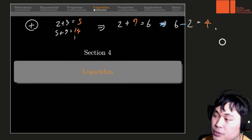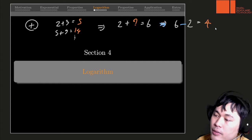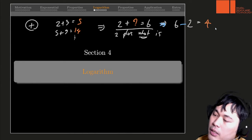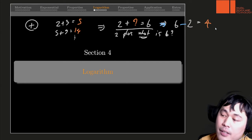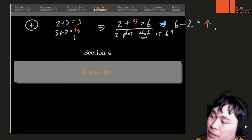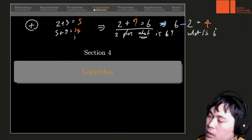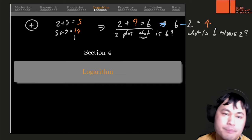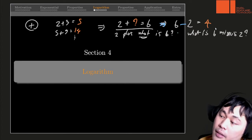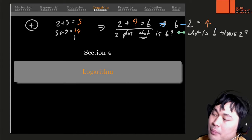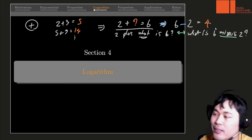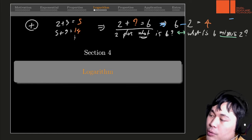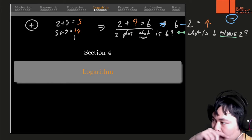The answer and the question mark here is number 4 because 2 plus 4 is 6, so 6 minus 2 is 4. In this question we are asking 2 plus what is 6, and the answer is 4. It happens to be the same question as what is 6 minus 2. These two questions are equivalent, and they are equivalent because we introduced the new operation called minus.